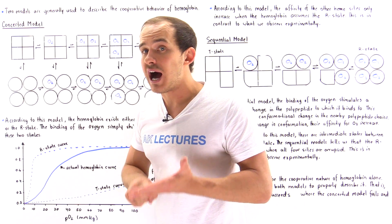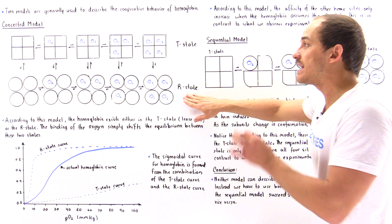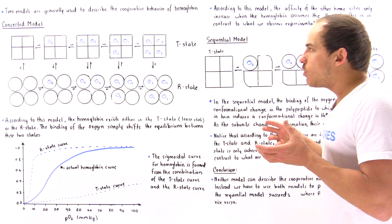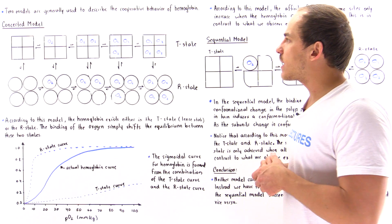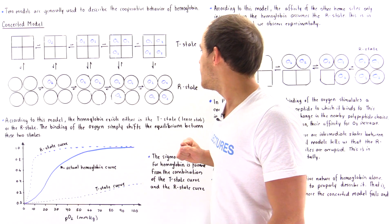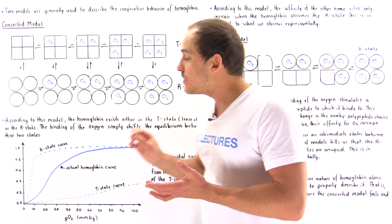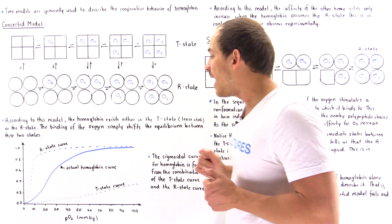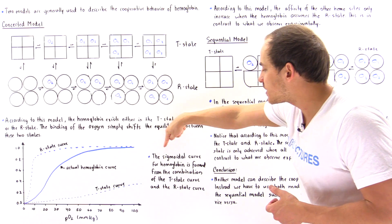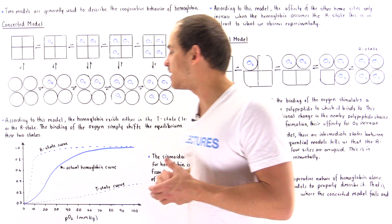Finally, if we add one more oxygen, we shift the equilibrium almost entirely toward the R state, and the hemoglobin molecule will exist exclusively in the R state. The oxygen binding curve for the T state is described by a shallow curve, and the R state is described by a steep curve. To obtain the sigmoidal curve we actually see for hemoglobin oxygen binding, we combine these two curves.